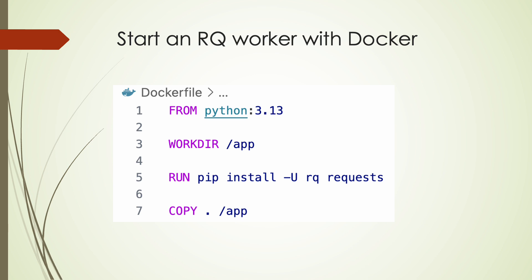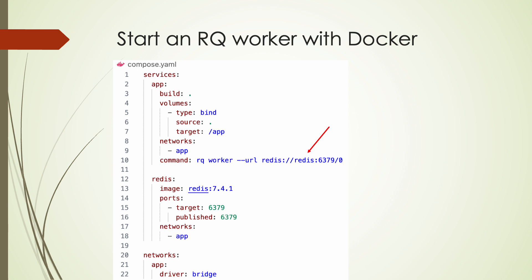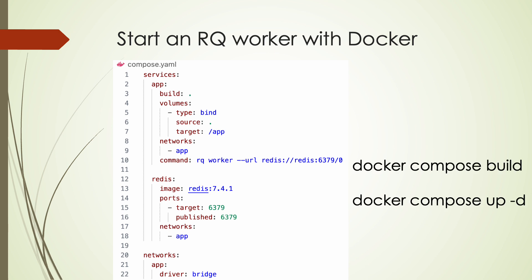First, we need to create a Dockerfile which will install the dependencies and also copy the project files. Then create a compose YAML file which contains two services — one for the worker and the other for Redis. Note that in the worker service, the Redis connection URL uses Redis as the host, which is the service name of the Redis service in the compose YAML. The two services can communicate with each other as they are in the same network. After that, we can build the image and bring up the services. Now the RQ worker and Redis will work on all operating systems, which highlights the flexibility and scalability of RQ.